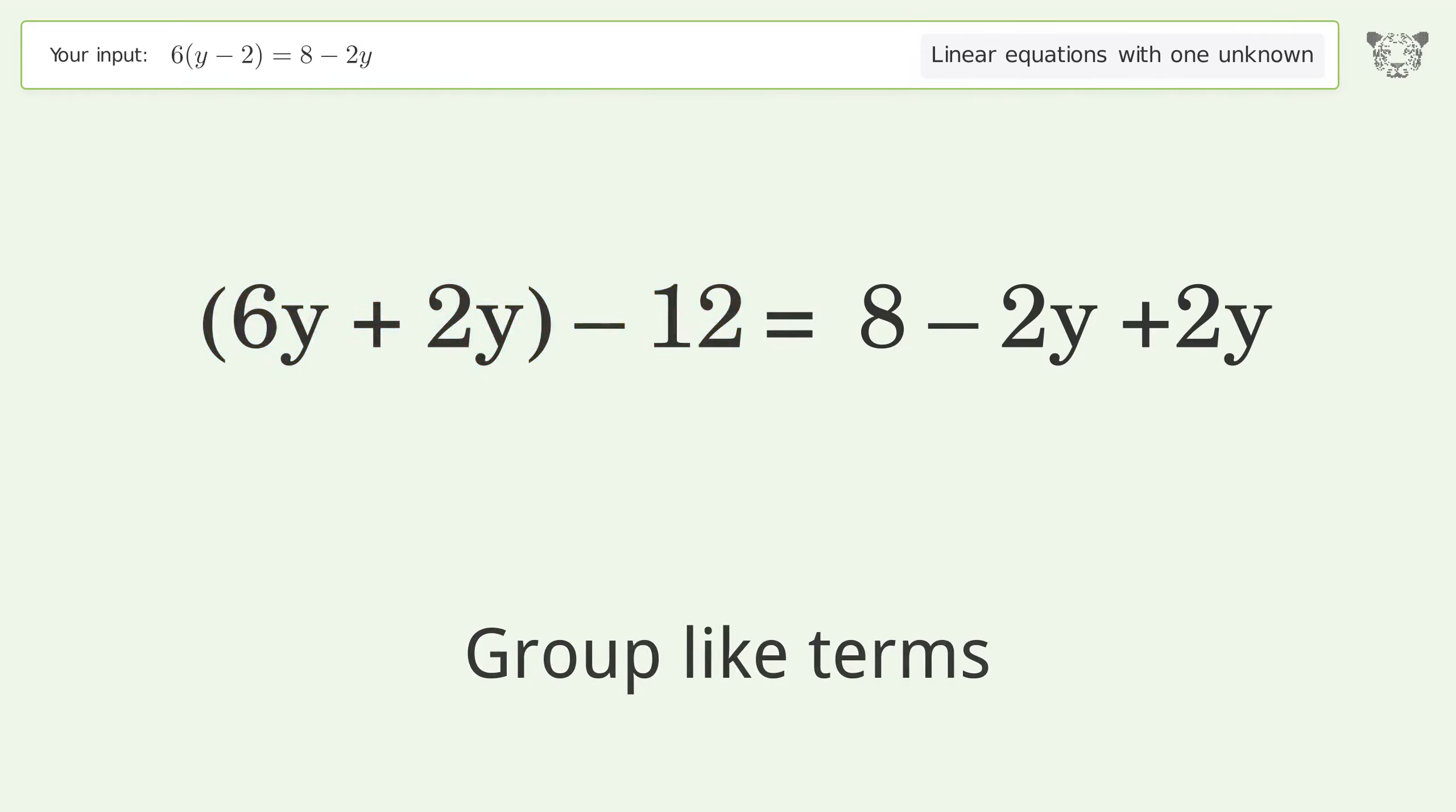Group all constants on the right side of the equation. Add 12 to both sides. Simplify the arithmetic.